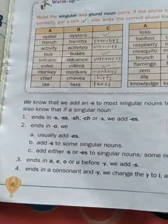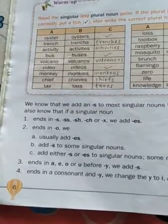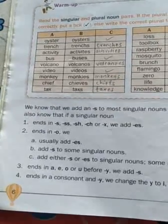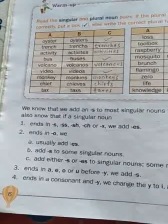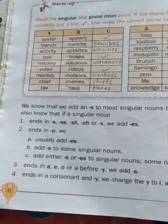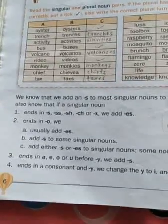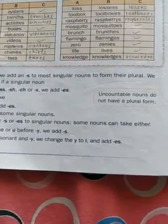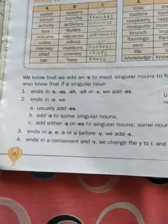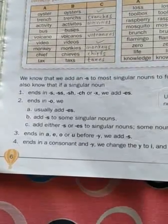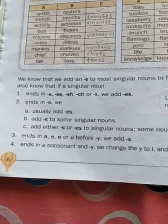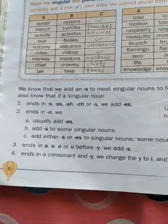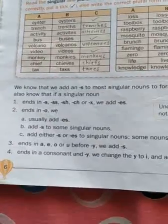Rule number two: nouns which end in -o usually add -es, though some singular nouns just add -s, and a third group can take either -s or -es. Rule number three: nouns which end in a vowel — a, e, o, or u — before -y: we add -s.